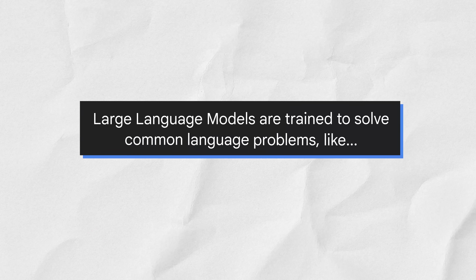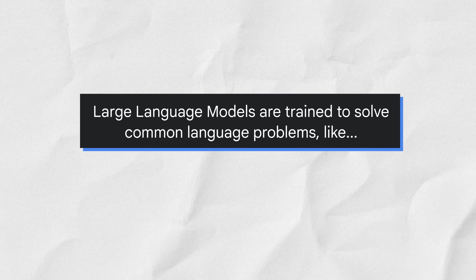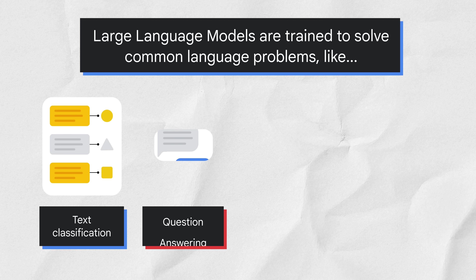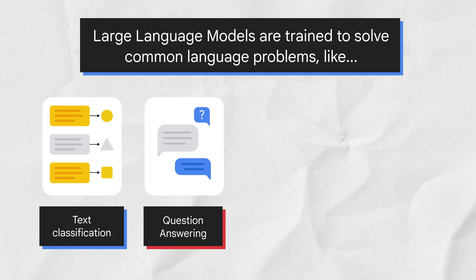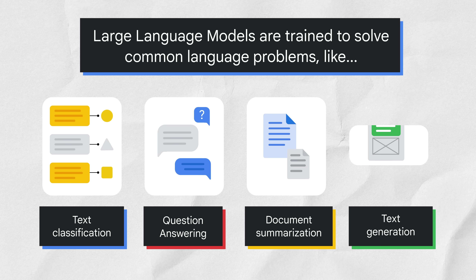These models are trained for general purposes to solve common language problems such as text classification, question answering, document summarization, and text generation across industries. The models can then be tailored to solve specific problems in different fields such as retail, finance, and entertainment using a relatively small size of field datasets.